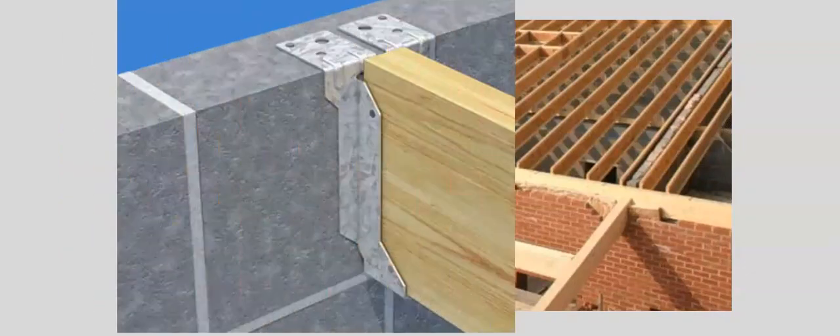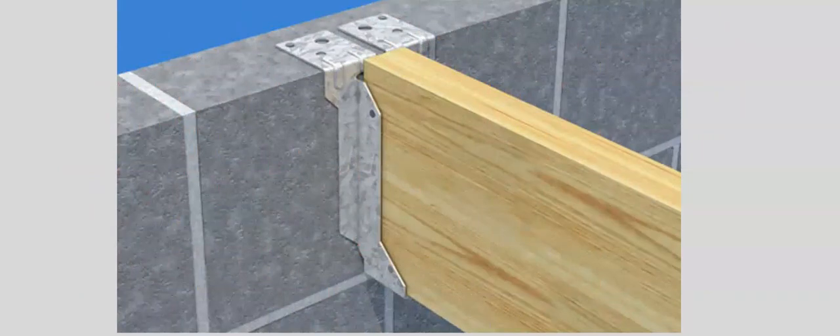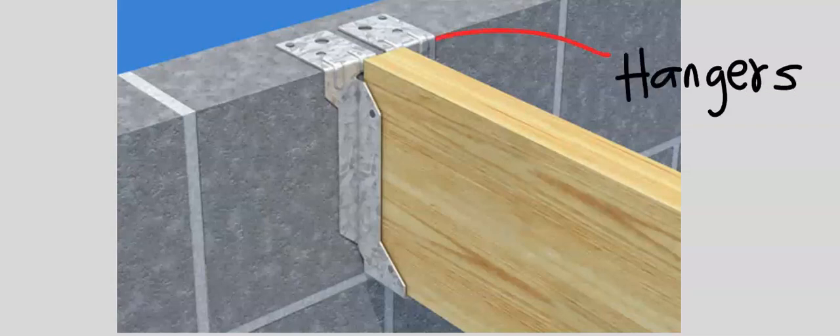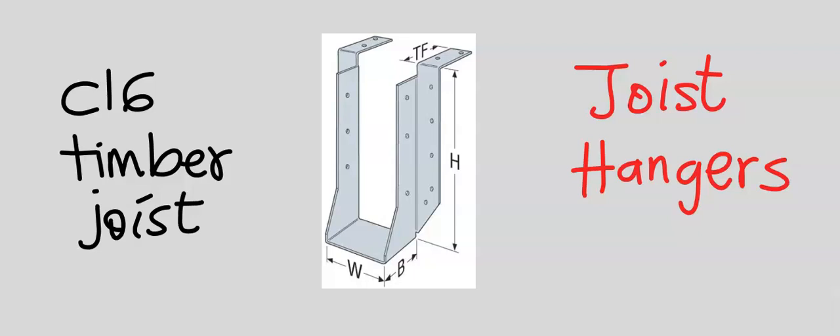Joists are attached to a beam or to a wall using joist hangers. Joist hangers come in different shapes and sizes. Hence, before you buy a joist hanger, you should be able to determine the size of the joists. For example, a C16 timber joist should fit into a corresponding joist hanger.